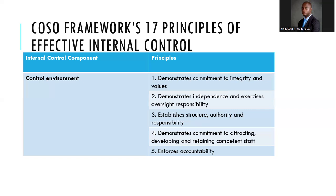Principle five: enforce accountability. People's actions must be traceable in the organization. There must be rewards for doing things right and penalties for doing things wrong. You don't want chaos or a carefree attitude where people submit reports whenever they like or miss deadlines. People must be responsible for their actions and inactions. Those are the five principles mapped to the control environment.